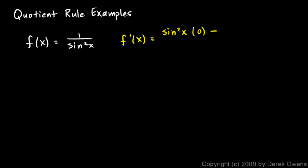minus high, which is 1, times d low, and the derivative of sine squared x involves the chain rule, so we need to first apply the power rule, and we get 2 times sine x to the first, and then times the derivative of the sine function, which is cosine x.